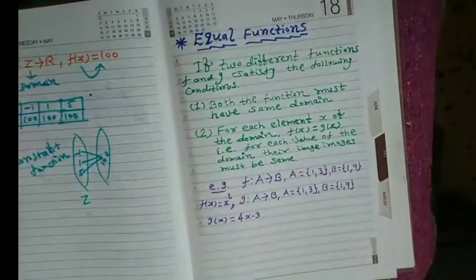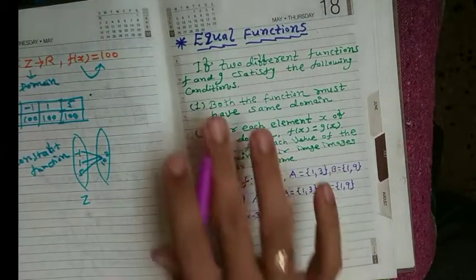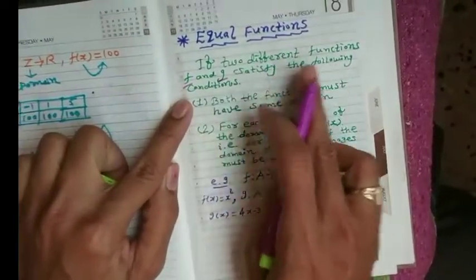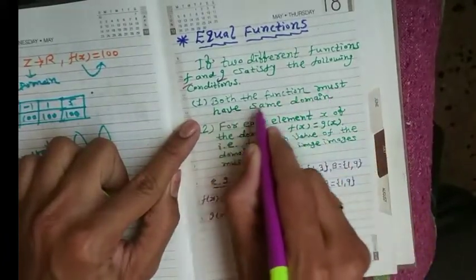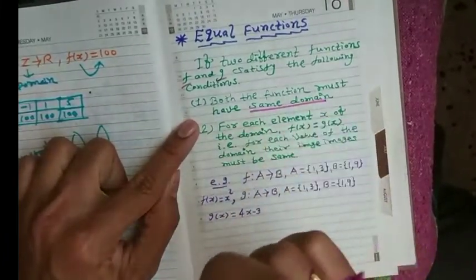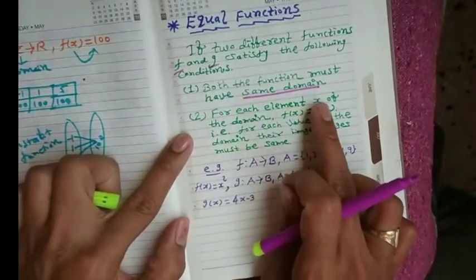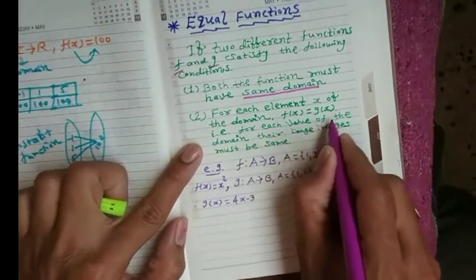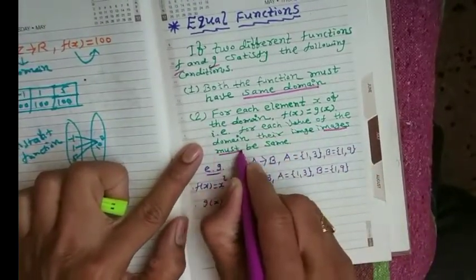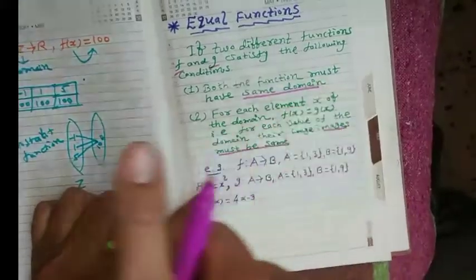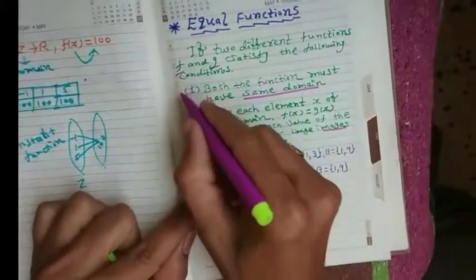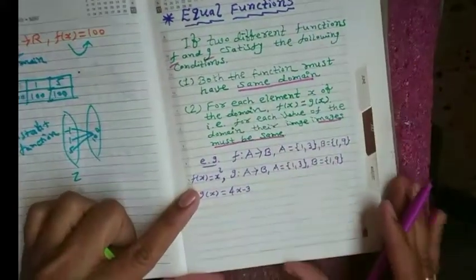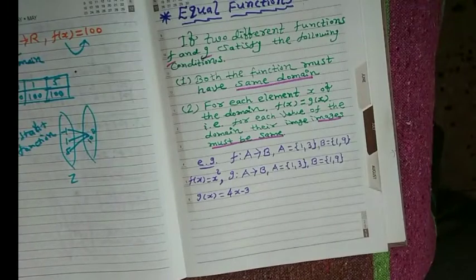Now we discuss one important definition: equal functions. If two different functions f and g satisfy the following conditions — first, both functions must have the same domain; second, for each element x of the domain, f(x) = g(x), that is, for each value of the domain their images must be same — then they are called equal functions.